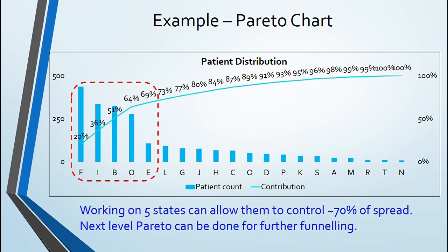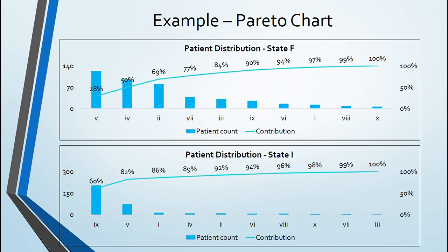Government got their priority and states were informed who would again do the same assessment within their states. Giving example of state f and state i here who did similar assessment of their state region-wise. Tool helped them identifying their priority region as well. This is how useful Pareto chart can be.